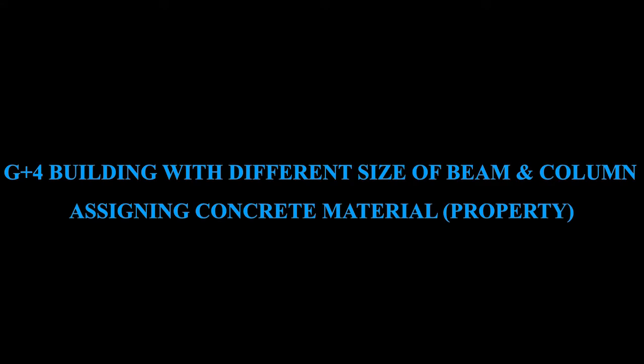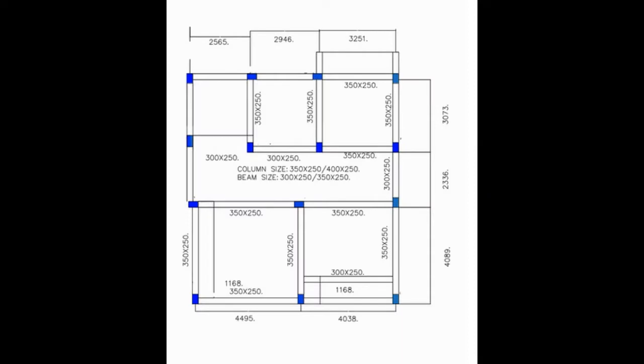Hello everyone, welcome to my YouTube channel. In this video tutorial I will discuss how to assign the section properties of all the members — beam and column — with the help of STAAD Pro software. Here is the floor plan of a G+4 building where all the dimensions are in millimeters.